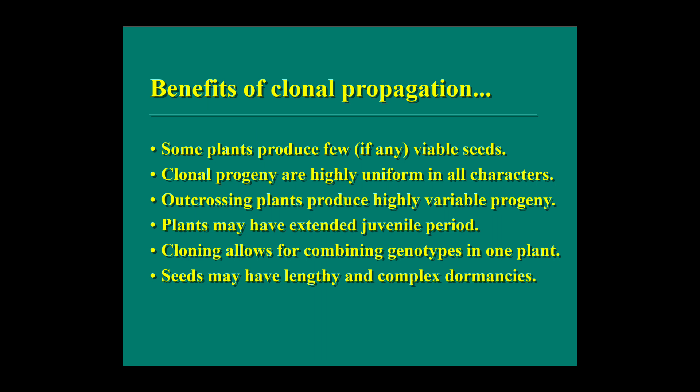Benefits of clonal propagation: Some plants produce few viable seeds, so the chances of growing in nature are very low. In that case, we use a vegetative structure or clone as propagation material. Clonal progeny are highly uniform in all characters — all traits carry over to the progeny. Outcrossing plants produce highly variable progeny because genetic recombination from two parents introduces variability.